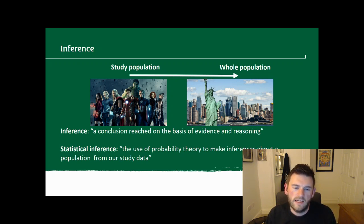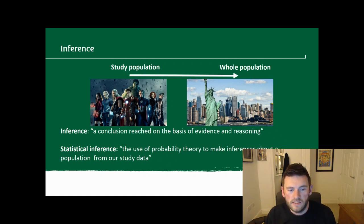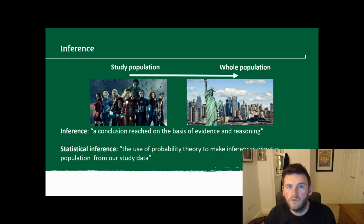Inference can be defined as a conclusion reached on the basis of evidence and reasoning. We don't need the statistics to tell us that the Avengers is unlikely to be a representative study population that we can apply results on a bigger scale. Statistical inference is where we use probability theory — something we'll cover in a few moments — to make those judgments and conclusions about a population from our study data, essentially using statistical models rather than other kinds of judgment.